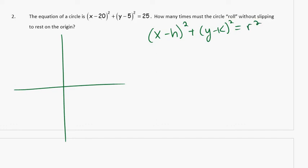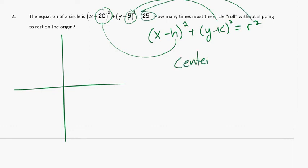So the center of this circle is going to be (20, 5), and the radius is going to be 5, because if the radius squared equals 25 and we square root each side, then we know the radius must be 5.